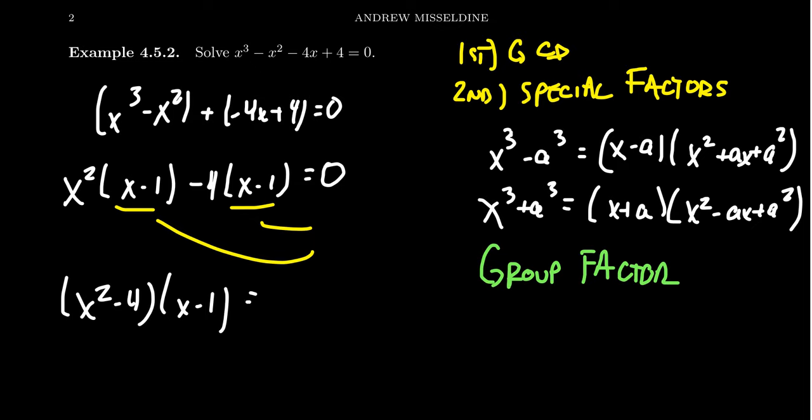The x squared minus 4 is a difference of squares, so it factors a little bit more. We get x minus 2, x plus 2, and x minus 1. And thus, setting each of these equal to 0, our solutions would be 2, negative 2, and 1.